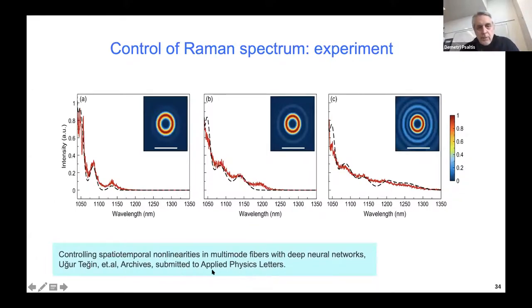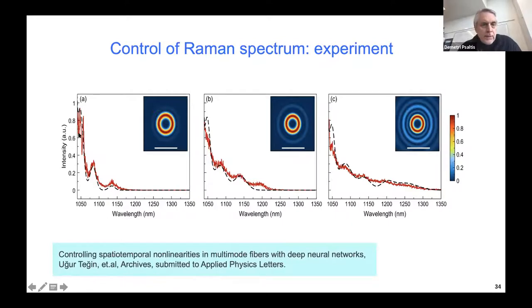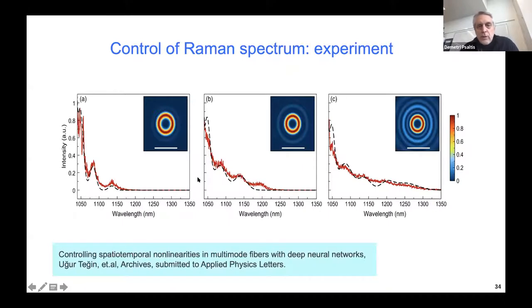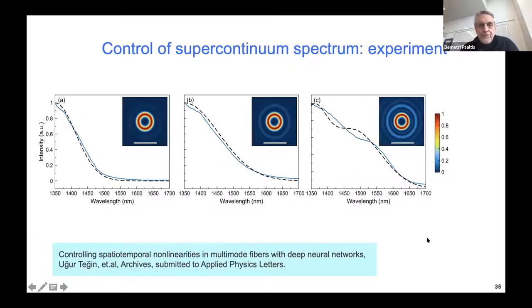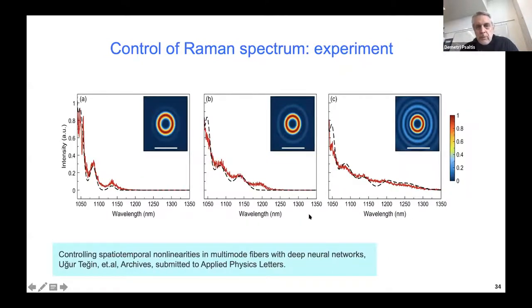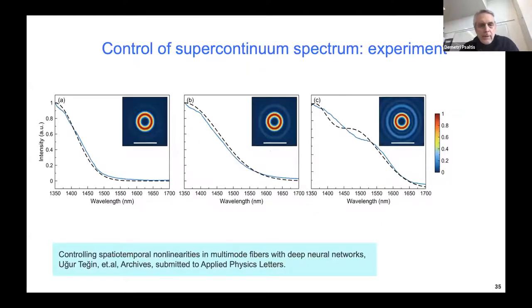Results published in APL show that the target spectrum (blue) and the actual spectrum produced (red) match well. By launching the proper spatial distribution determined by the neural network, the output spectrum can be controlled. This works for different spectral bands — from 1000 to 1300 nm and also the band where Raman scattering kicks in.